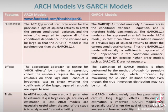In ARCH models, there are Q plus 1 parameters to estimate. If Q is large enough, accuracy of estimation is lost.